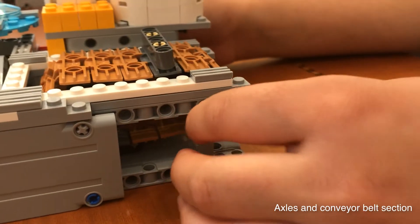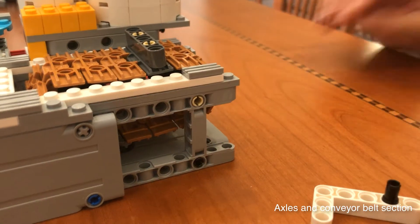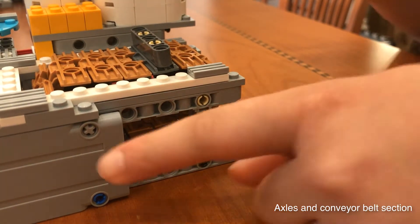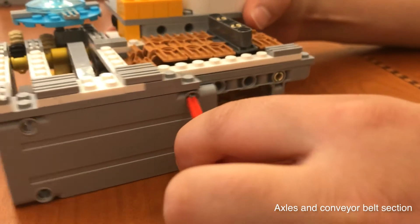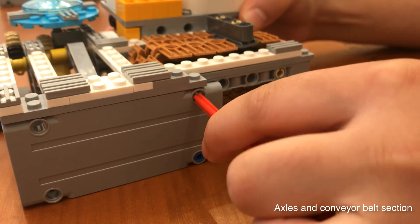First, we are going to check the conveyor belt. There are a few places that we need to check. First, you see this axle right here? We are going to need to push that in with another axle to make sure that it is fully in place.